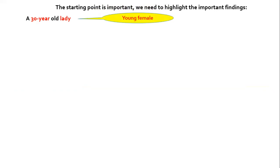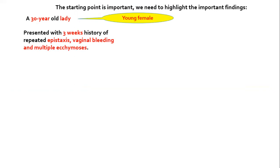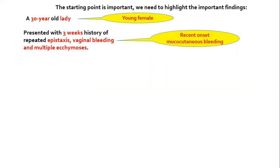The patient being a 30-year-old lady means she is a young female. There is a three-week history of bleeding from multiple sites, meaning the bleeding is of recent onset. The type of bleeding is mucocutaneous. As you know, a platelet problem usually presents with mucocutaneous bleeding, while clotting factor deficiency may present with deep-seated bleeding, although this is not always the case.